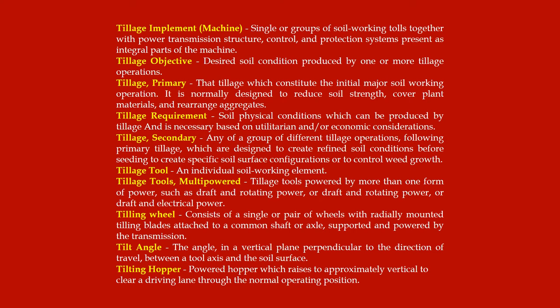Tillage secondary: any of a group of different tillage operations following primary tillage, designed to create refined soil conditions before seeding, to create specific soil surface configurations, or to control weed growth. Tillage tool: an individual soil-working element. Multi-powered tillage tools: tillage tools powered by more than one form of power, such as draft and rotating power, or draft and electrical power. Tilling wheel: consists of a single or pair of wheels with radially mounted tilling blades attached to a common shaft or axle, supported and powered by the transmission.